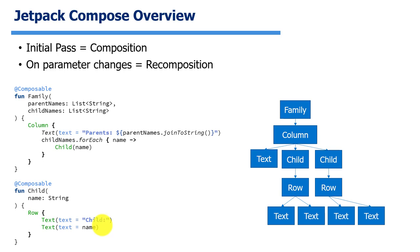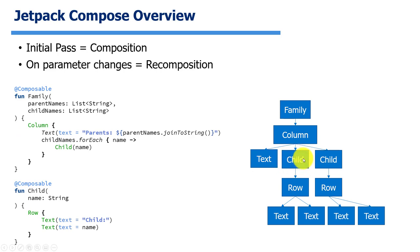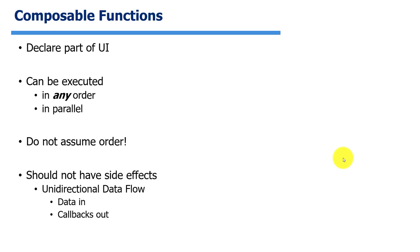Once we have that tree, all the parameters passed in are tracked — at each node, it records what parameters drove the creation of that node. On the next pass through the tree, it looks at the parameters that came in, and if the parameters have changed, it will recompose — executing the code again to replace that node or an entire subtree. The more small, low-level composable functions you have, the finer-grained control you have over rendering. Small functions can be skipped completely based on whether their data changed; putting everything in one big function reduces that granular efficiency.